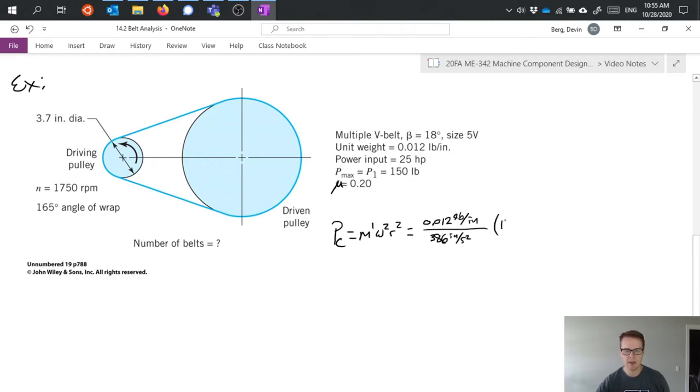I'm going to multiply that by 1750 rpm times 2 pi over 60 to do the unit conversion to radians per second and all of that is squared and times r. We're given the diameter of 3.7 inches so we'll divide that by 2 and square it.